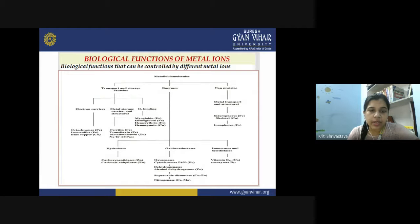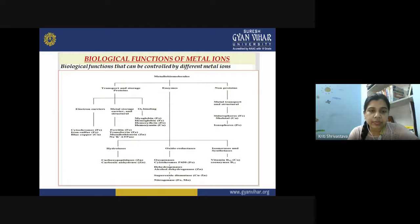Talking about transport and storage proteins, these biological molecules can be electron carriers — for example, cytochromes, iron-sulfur type cytochromes, and blue copper, which contain iron and copper ions. We can also have metal storage carriers and structural components: ferritin, transferrin, metallothionine, and sodium-potassium ATPase. These carriers contain metal ions like iron, zinc, sodium, and potassium.